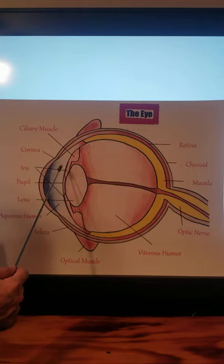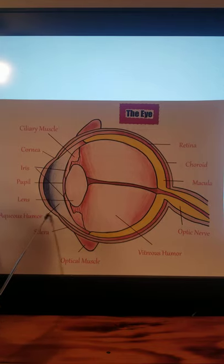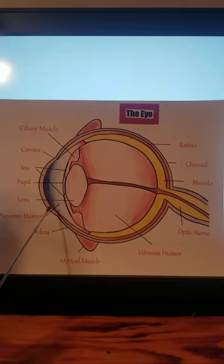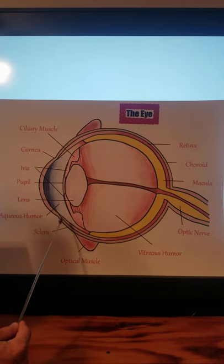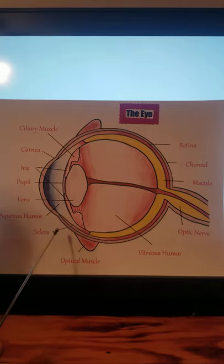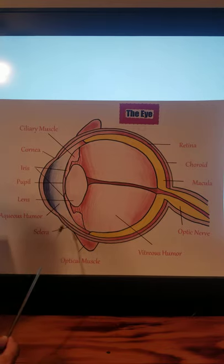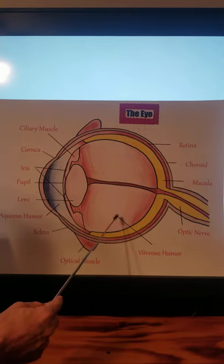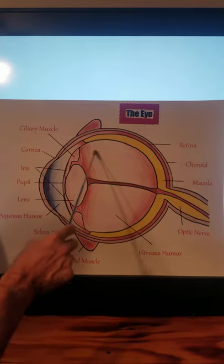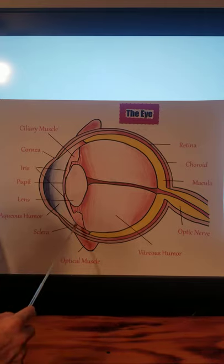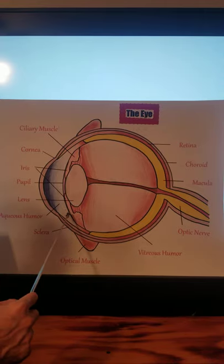The vitreous humor is a clear, colorless gelatinous mass that fills the rear two-thirds of the eye, and also part of the front.